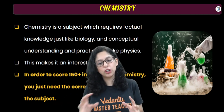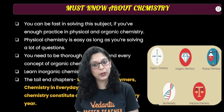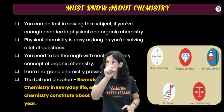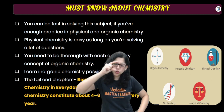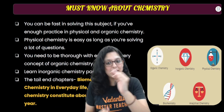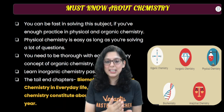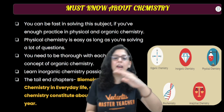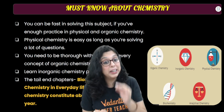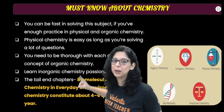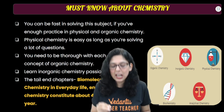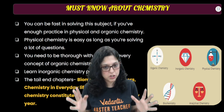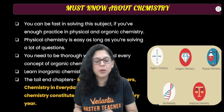Scoring 150 plus requires the correct approach. Your speed is very important so that you get some extra time for physics. That speed will come from solving quickly. If you have done a lot of solving in physical chemistry and organic chemistry, your speed will automatically improve. Physical chemistry depends entirely on how much solving you have done — more previous year questions and more mock test papers will automatically increase your speed.